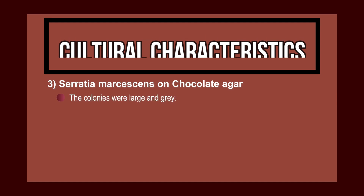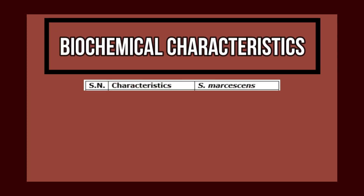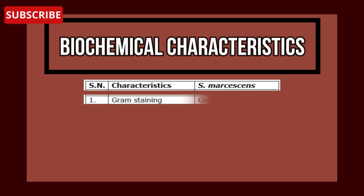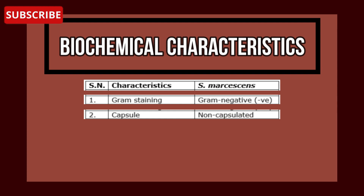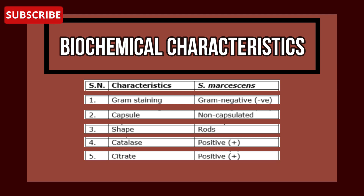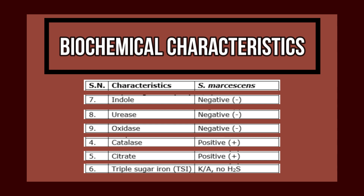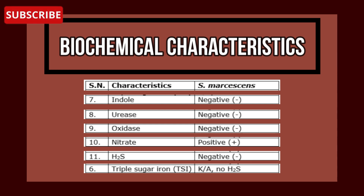The biochemical characteristics of Serratia marcescens: gram stain is negative, no capsule present, shape is rods. It is catalase positive, citrate positive. Triple sugar iron (TSI) shows alkaline slant and acid butt with no hydrogen sulfide. Indole is negative, urease is negative, oxidase is negative, nitrate is positive, no hydrogen sulfide, motility is positive.